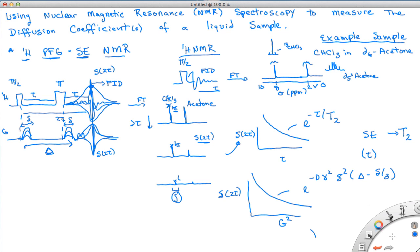Now again, the small delta is the length of our gradient pulse, large delta is the time between the two gradients. So these are both NMR parameters that we set during the NMR experiment.